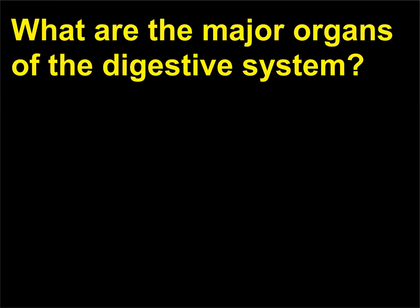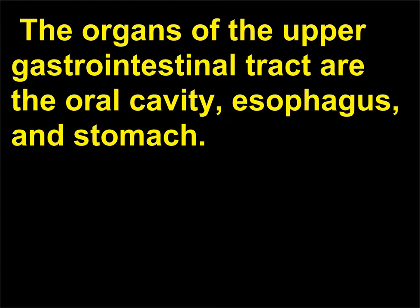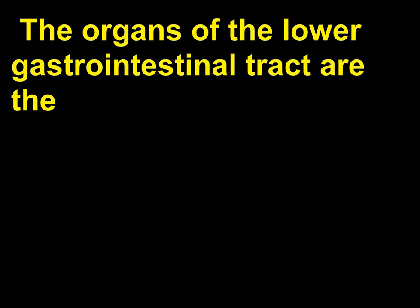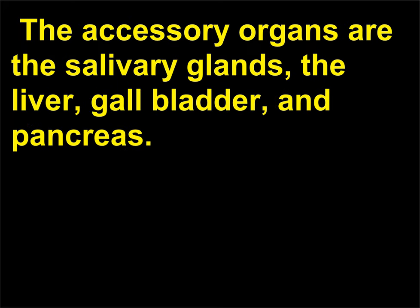What are the major organs of the digestive system? The digestive system consists of the upper gastrointestinal tract, the lower gastrointestinal tract, and the accessory organs. The organs of the upper gastrointestinal tract are the oral cavity, esophagus, and stomach. The organs of the lower gastrointestinal tract are the small intestine and large intestine, also called the colon. The accessory organs are the salivary glands, the liver, gallbladder, and pancreas.